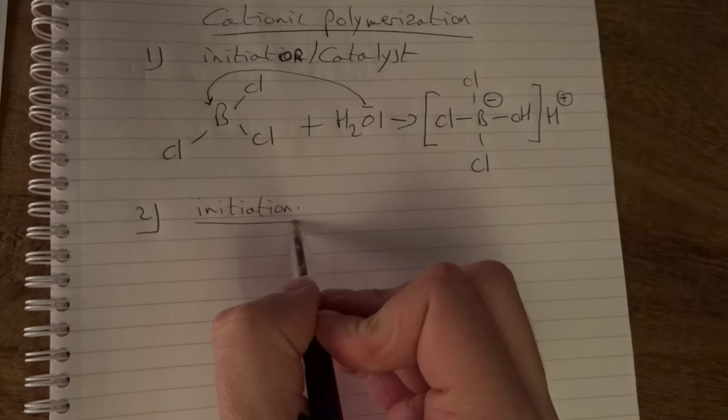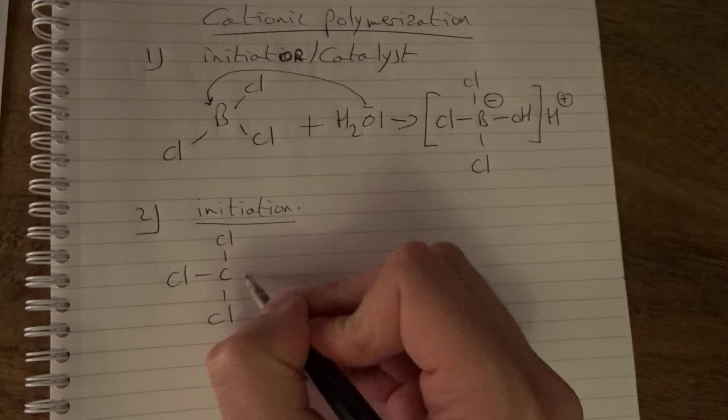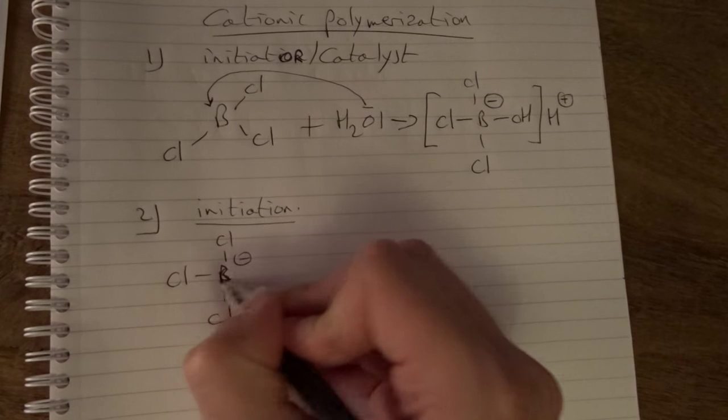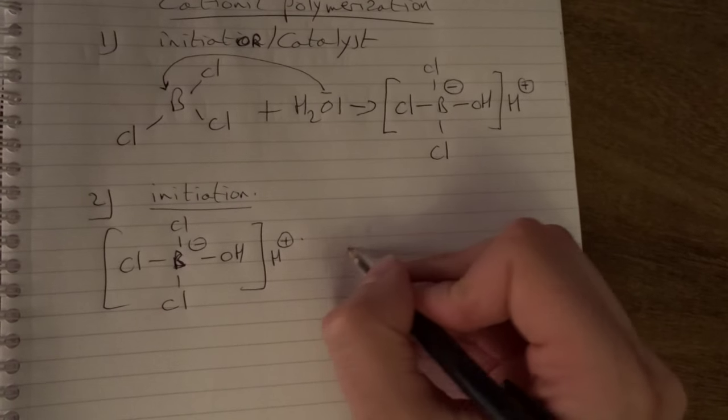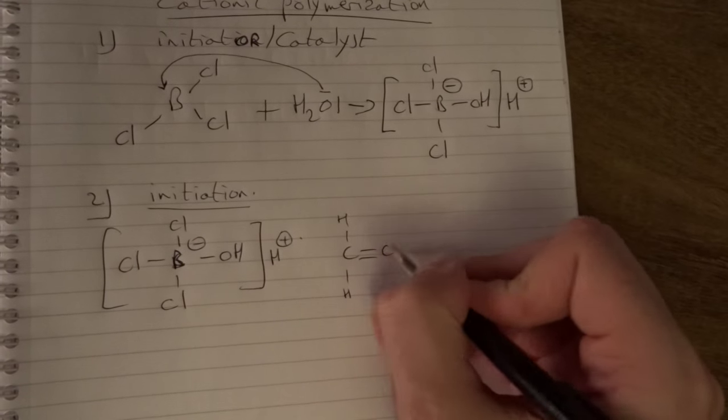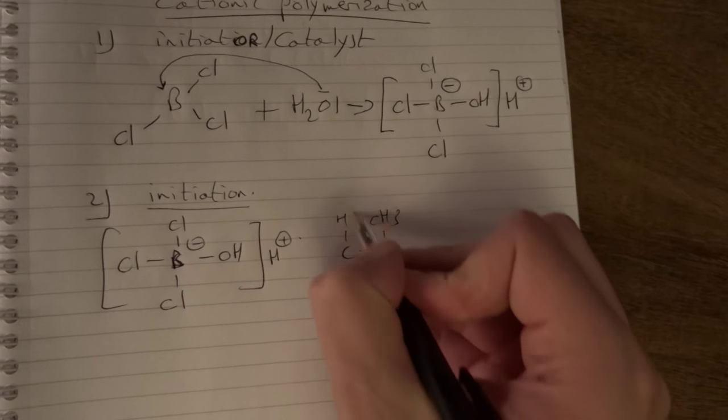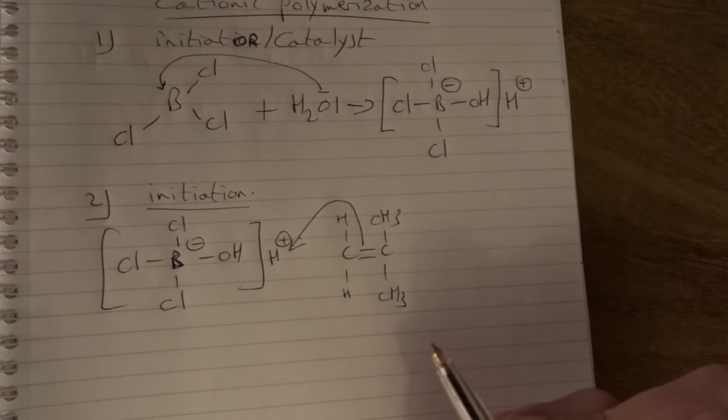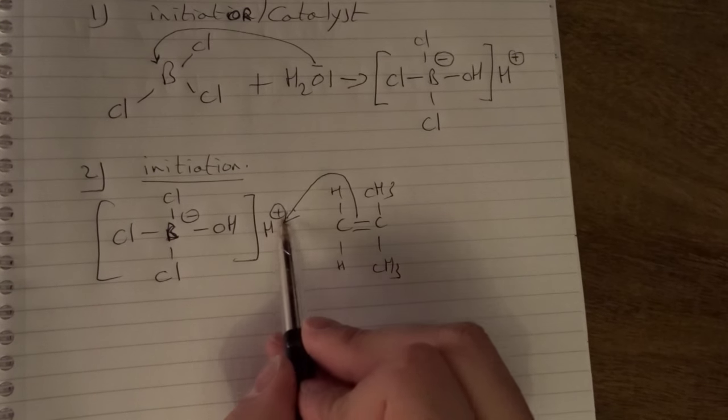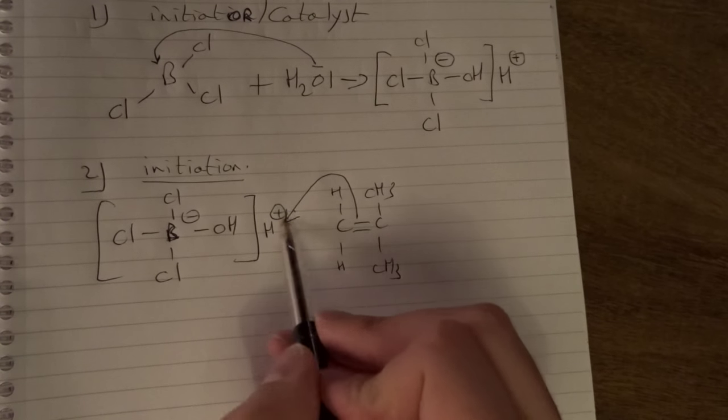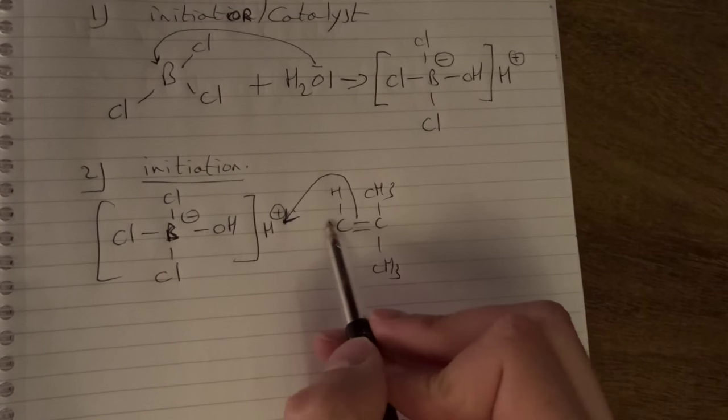In the initiation step we have the in situ produced initiator and it will react with the monomer. For example we take this monomer, just an example. This double bond is reactive and it can donate its electrons to the H where we react. In this example, in contrast to the free radical polymerization, we use here whole headed arrows because both of the electrons will be donated to the H.